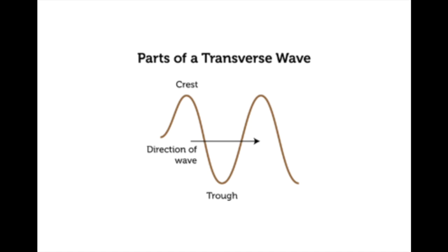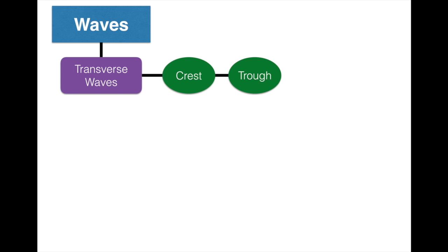Looking at the parts of a transverse wave: the direction of the wave is moving from left to right, the crest is the highest point of the wave, and the trough is the lowest point. So let's add to our graphic organizer — transverse waves have a crest and a trough. The highest point is the crest, and the lowest point is the trough.